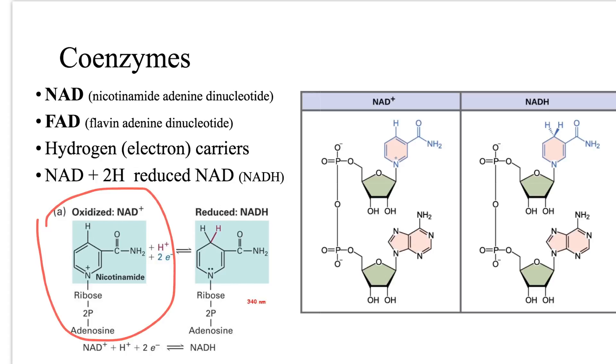Taking up two electron and one hydrogen ion and being reduced, it's either called as reduced NAD or NADH. But Cambridge prefers reduced NAD.